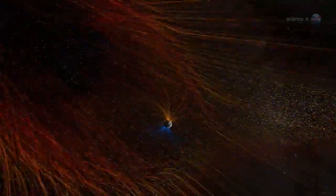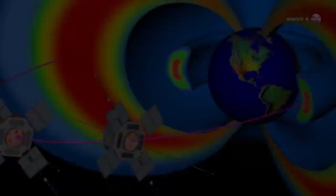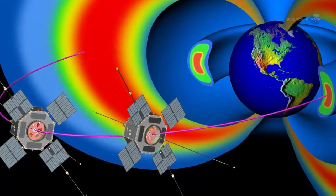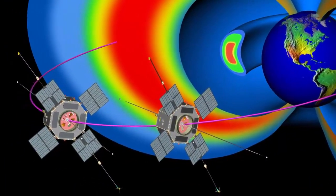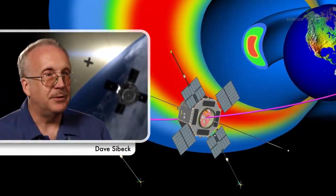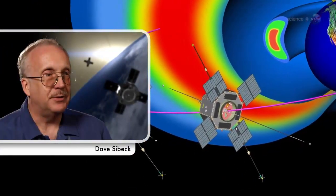The radiation belt storm probes are on a mission to find out for sure. The production of killer electrons is a matter of much debate, and chorus waves are only one possibility, notes Storm Probe's mission scientist Dave Seibach.